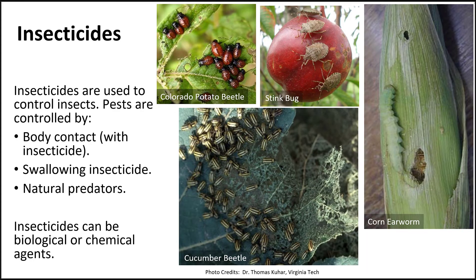There are a couple of ways to control insects: mechanical control, removing them by hand and dropping them in a bucket of soapy water, for example; using insecticides; or even natural predators. These techniques will vary based on the type of insect you're trying to control. An insecticide is effective in two ways — the insect has direct contact with the chemical, or chewing insects swallow the chemical.